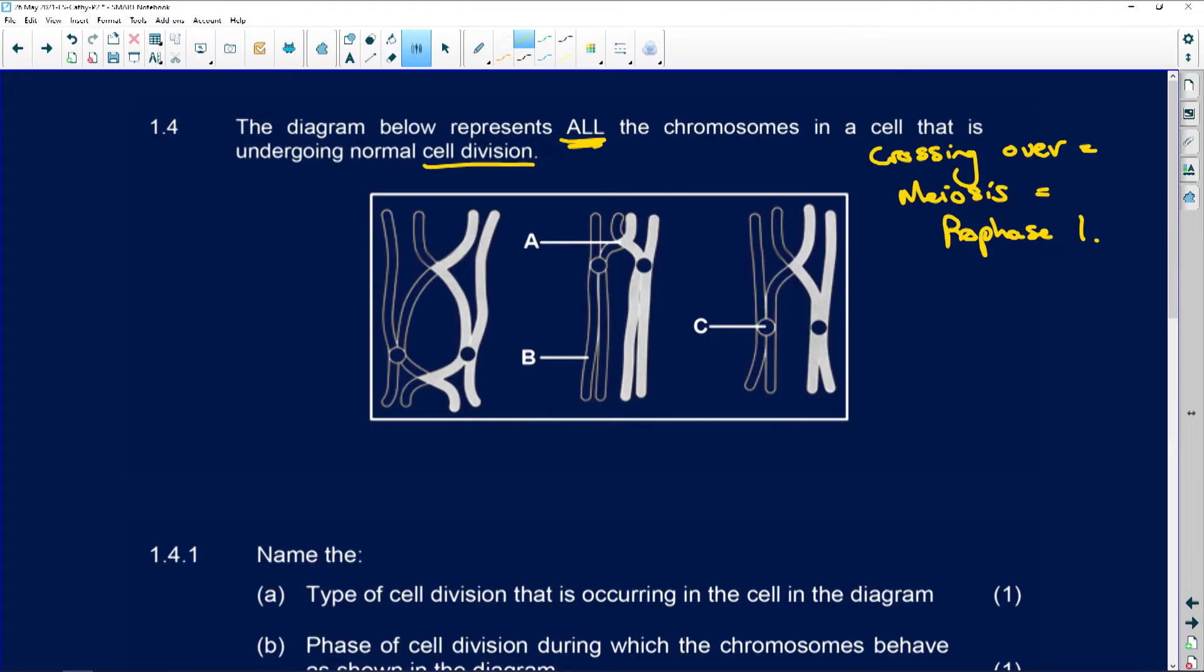Okay, so first thing, we do our labels. So that would be the point of crossing over. This would be the chiasma. This would be a chromatid. And these two are going to be sister chromatids. And this one and that one are going to be non-sister chromatids. And C is the centromere.